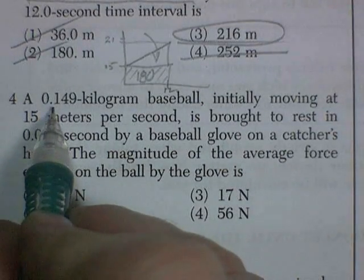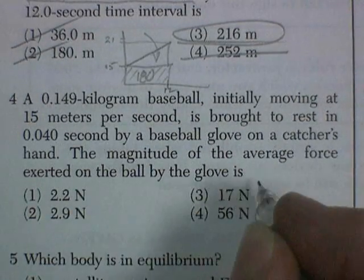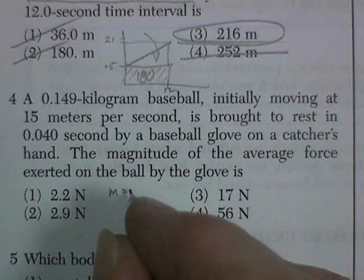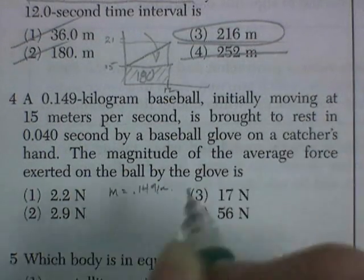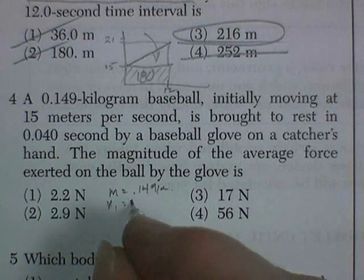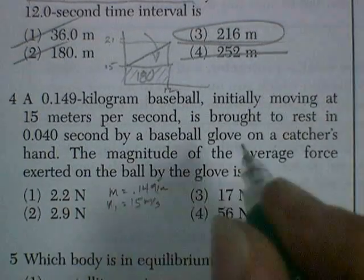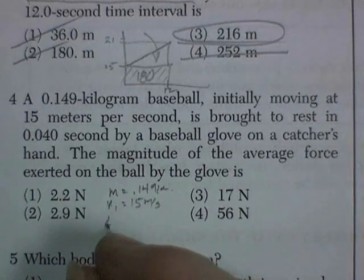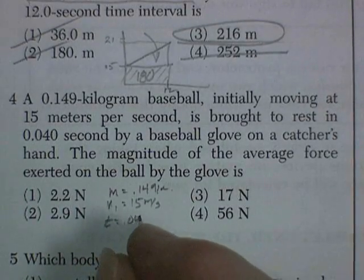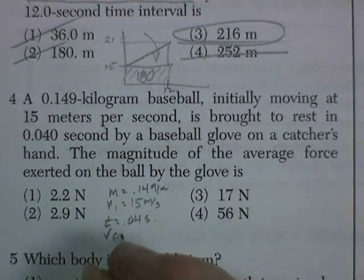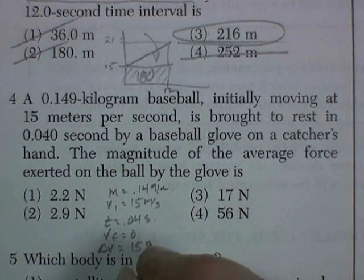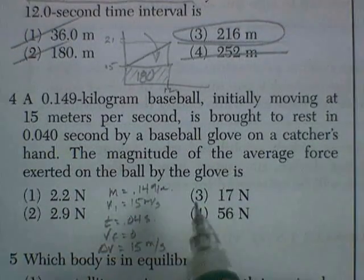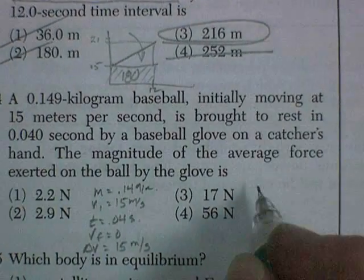Well, our luck is broke. A kilogram baseball. So we know the mass of the baseball is 0.149 kilograms. It's moving at initial velocity of 15 meters per second. It's brought to rest in a time of 0.04 seconds, which means the velocity final is 0, which means the change in velocity is also 15 meters per second. And they want to know the force.